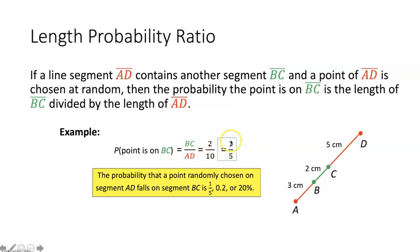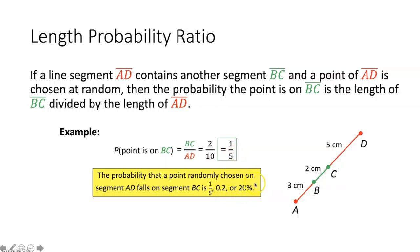So 2 over 10 simplifies to 1 over 5, meaning the probability that you choose some point on segment AD that also lies on segment BC is 1 out of 5, or 0.2. If we write this as a percent, we take 0.2 times 100 and get a 20% probability.